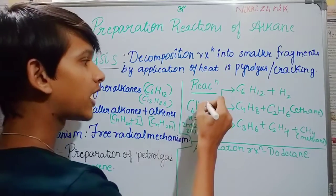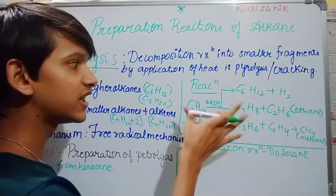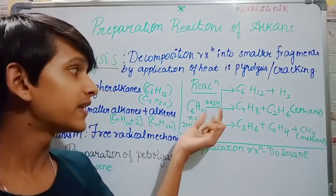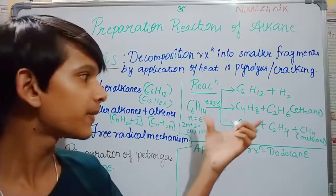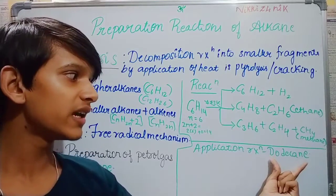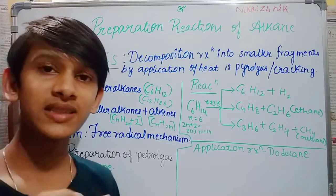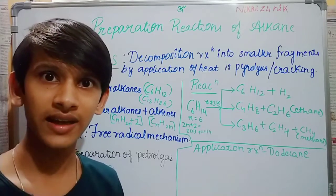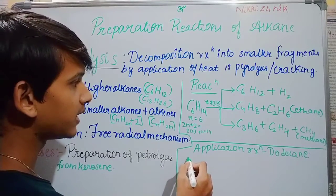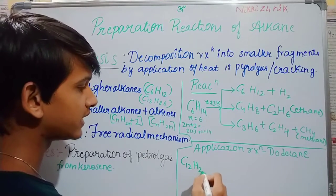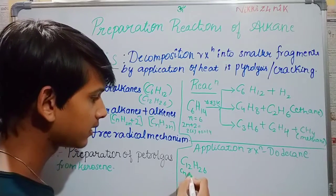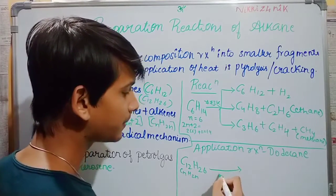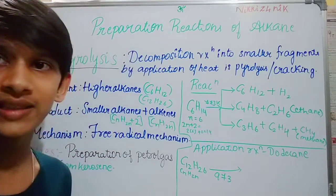At high temperature — 773 Kelvin — this is a very high temperature. Room temperature is 295–300 Kelvin. So 773 Kelvin is very high. If you look at dodecane, it is a simple alkane. So we will convert it to petrol gas from kerosene. The dodecane formula is C12H26. Checking: CnH2n+2 with n=12 gives 2×12+2 = 26 — correct. Now, at high temperature, 973 Kelvin.